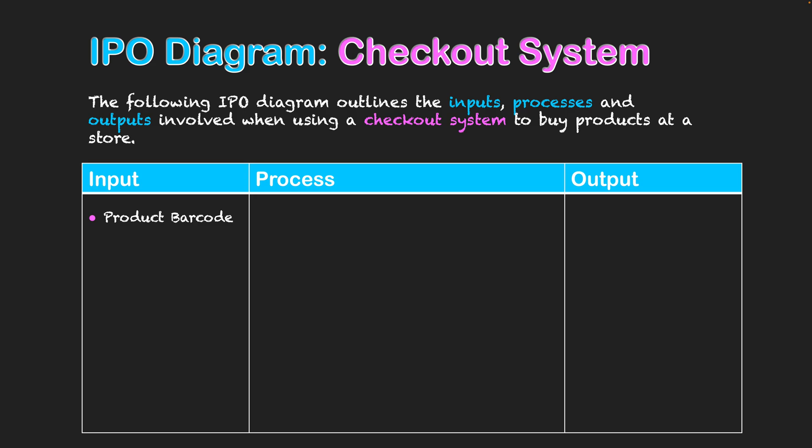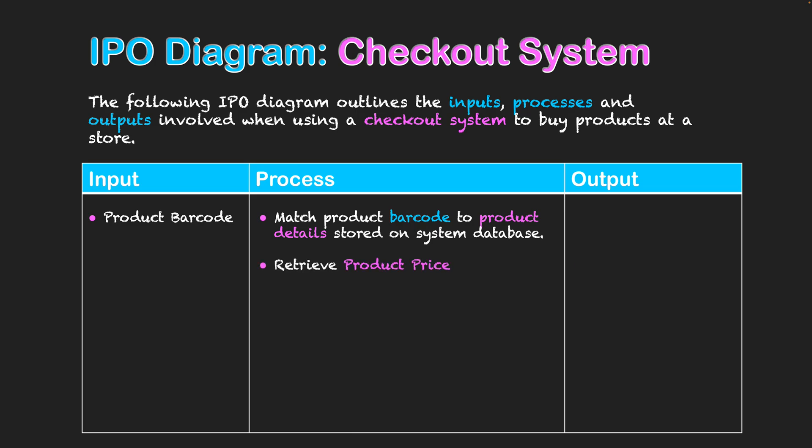The first input is getting the barcode — we want to obtain the barcode and put that into the system. In doing so, the attached process is that it will match the product barcode and obtain product details related to that product. This is obviously stored on the system database, and from gaining those details we want to retrieve the product price.